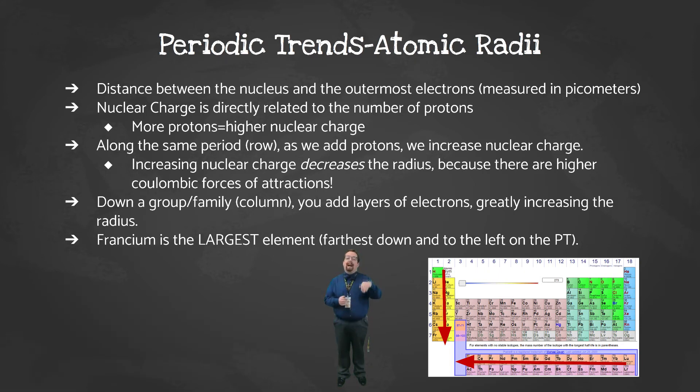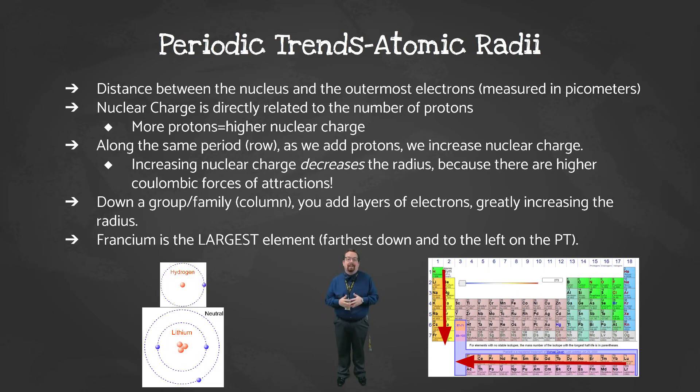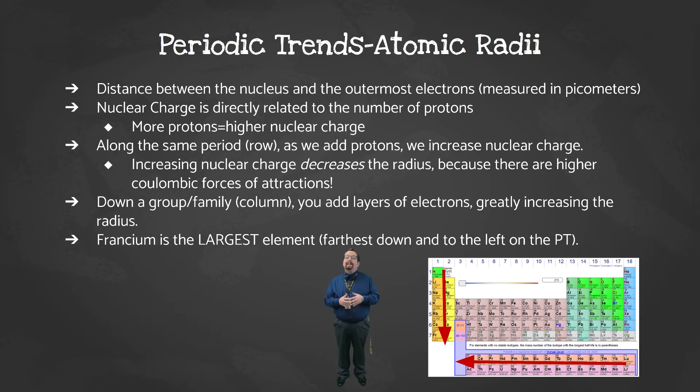As we move down a column on the periodic table, we add energy levels, or shells, of electrons. This makes our atom much bigger. Since the atomic radius increases from top to bottom and from right to left, francium is our largest element. Understanding the trend in atomic radius is by far the most important, as the rest of these trends can be reasoned from there.